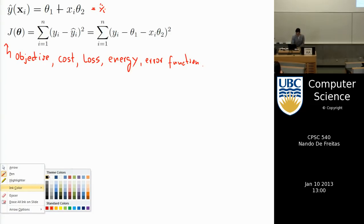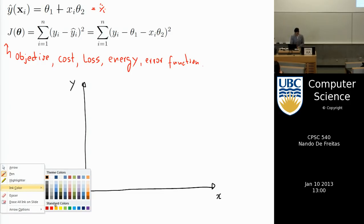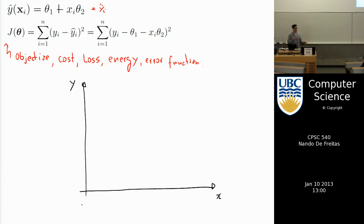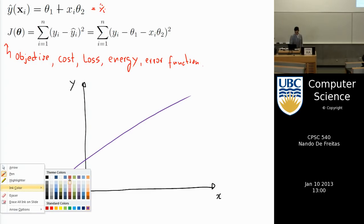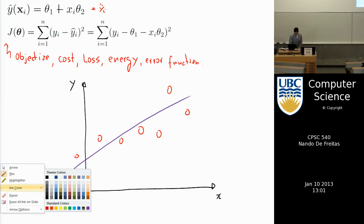Pictorially: we have two variables x and y, and i is an index over the N examples. Typically the idea is that we have a bunch of points and then we draw the line that fits the points. I tend to draw the line first and then add the points — that's cheating, but it makes it easier to explain.